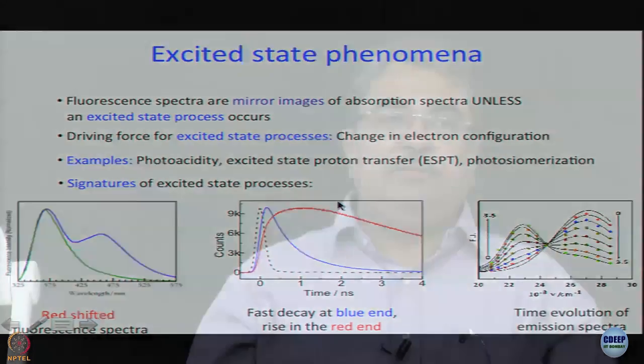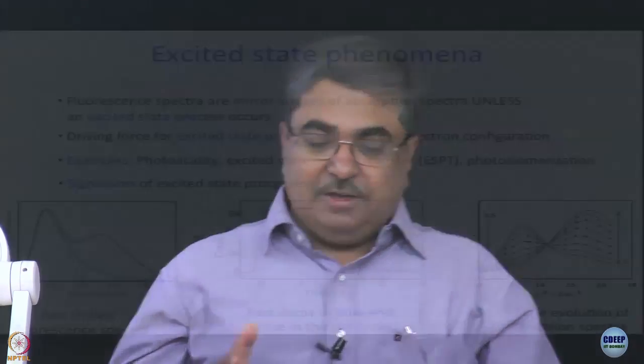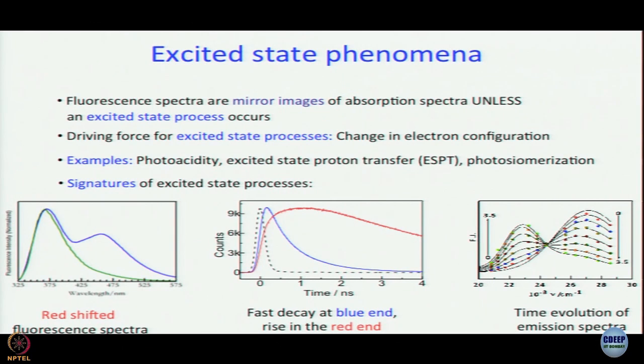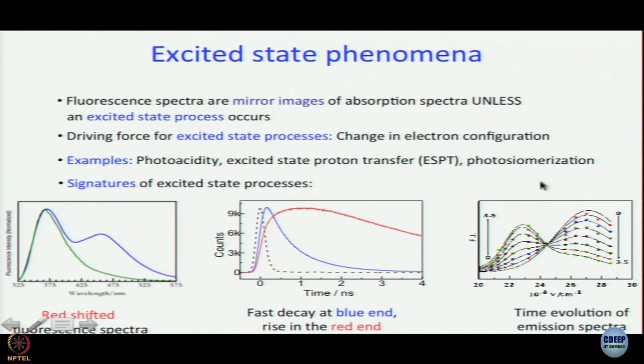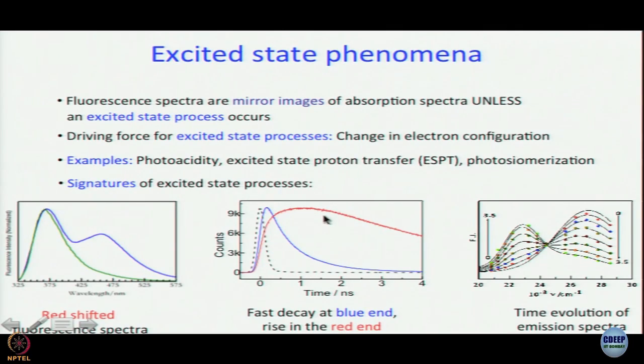Using these two decay profiles, one can construct the time-resolved emission spectrum, showing how the emission spectrum evolves over time. This is very useful, as we will discuss in a couple of modules. Nowadays in many instruments with two-dimensional detectors, you do not need to record the steady-state spectrum and the decay separately — you can directly get the time evolution of the emission spectrum. In the next module we will show an example of such data.